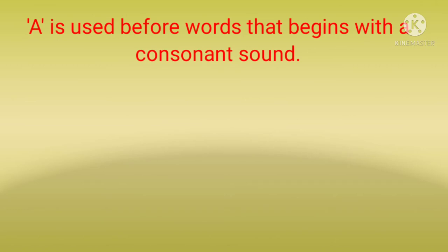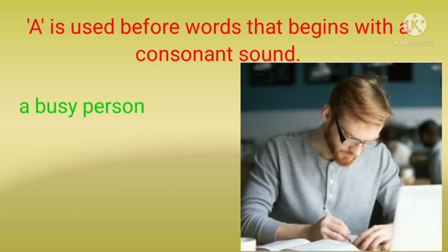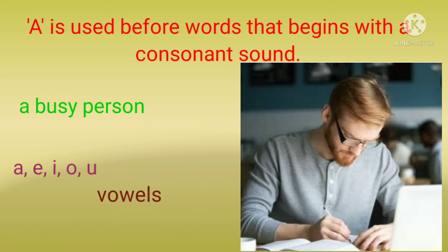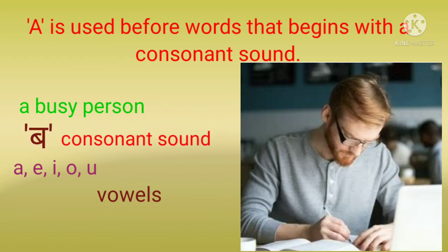Next: 'a' is used before words that begin with a consonant sound. Articles का use करते हुए सबसे पहले हम उसकी sound की तरफ ध्यान रखते हैं. For example, 'a busy person.' Busy से पहले हमने 'a' article लगाया क्योंकि 'b' जो sound है वो consonant sound है. Vowels होते हैं — A, E, I, O, U. इनकी sound के साथ हम 'an' article यूज़ करते हैं, but जो consonant sound होता है उनके साथ हम 'a' article यूज़ करते हैं. तो 'b' यहाँ consonant sound है तो हम यूज़ करेंगे — 'a busy person.'